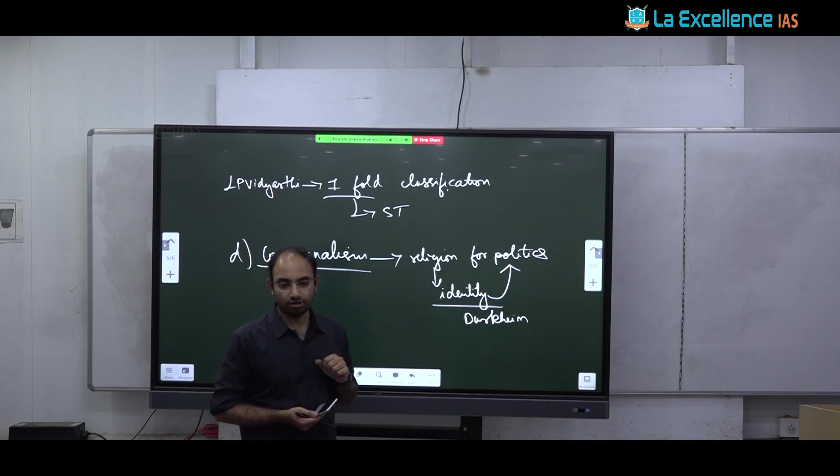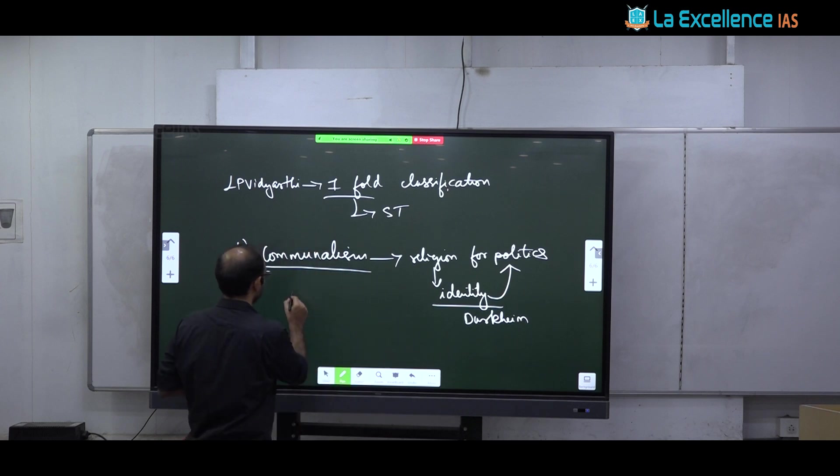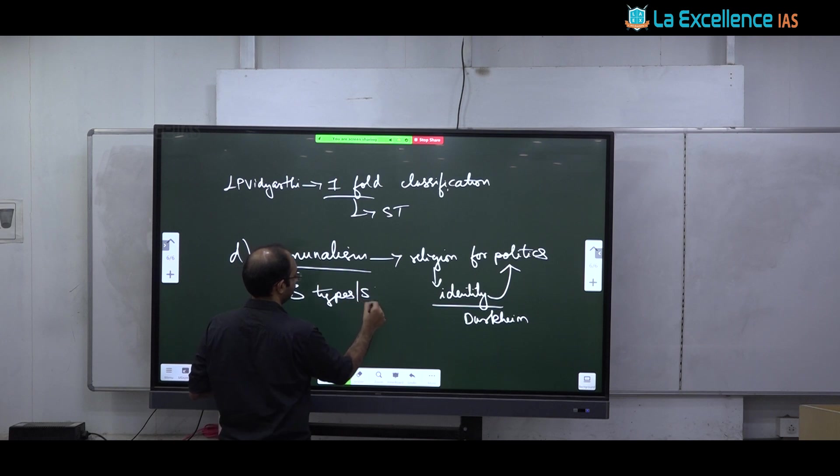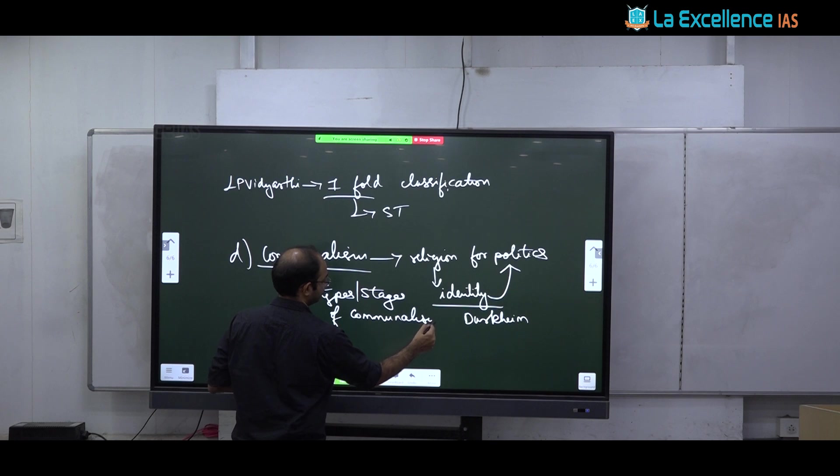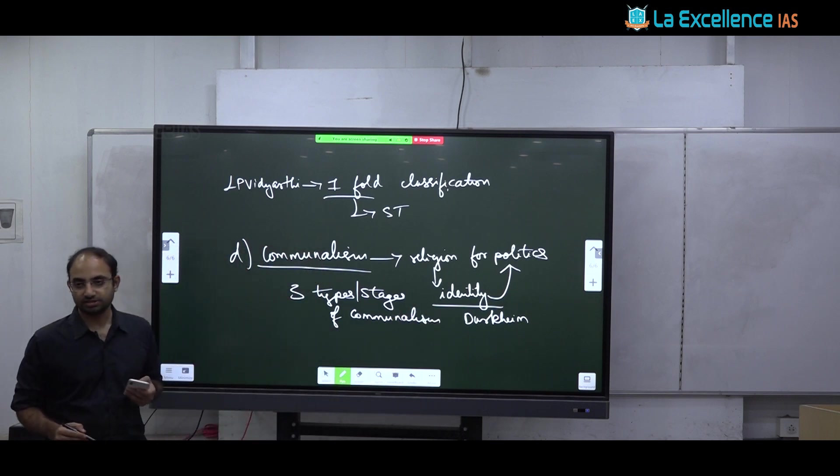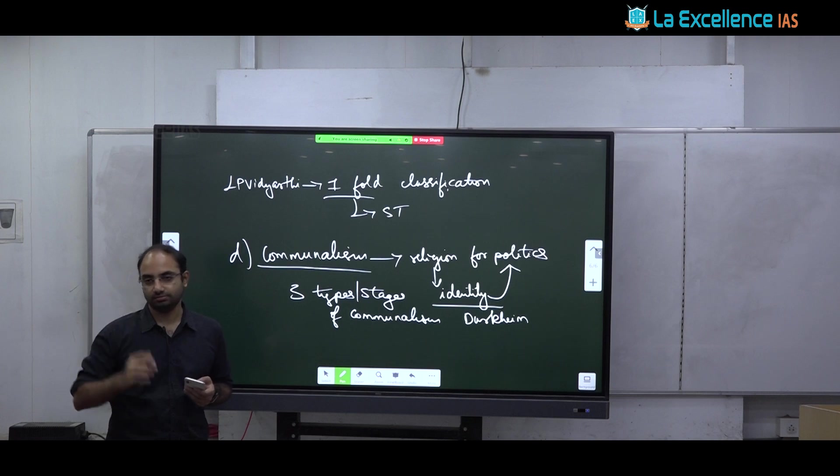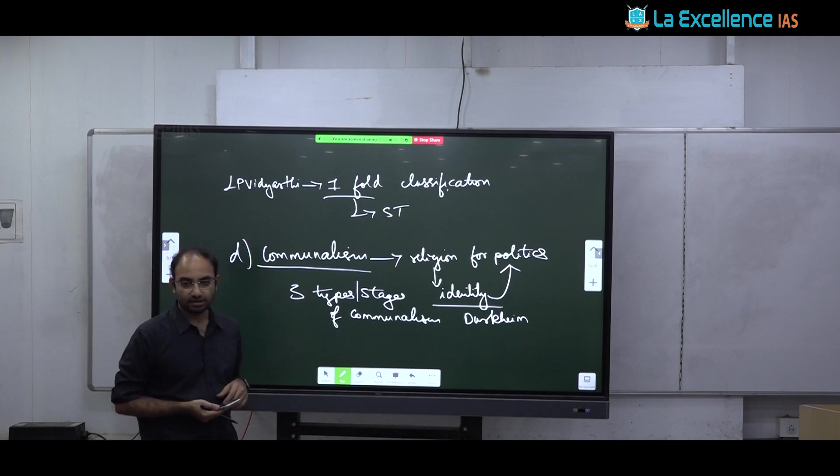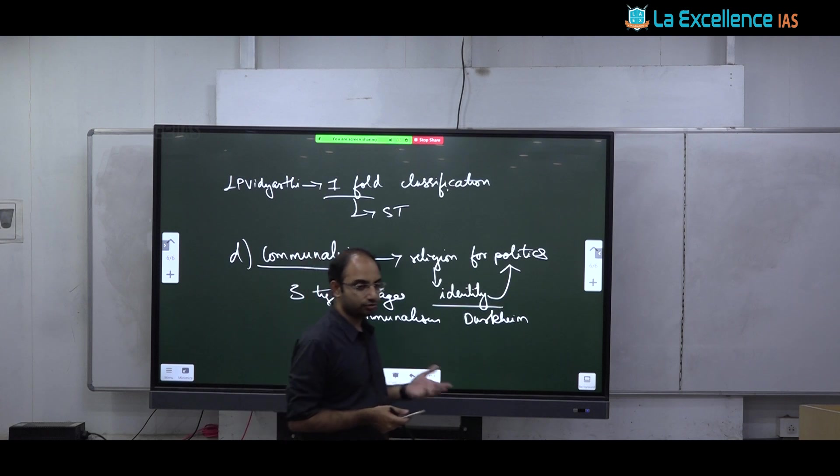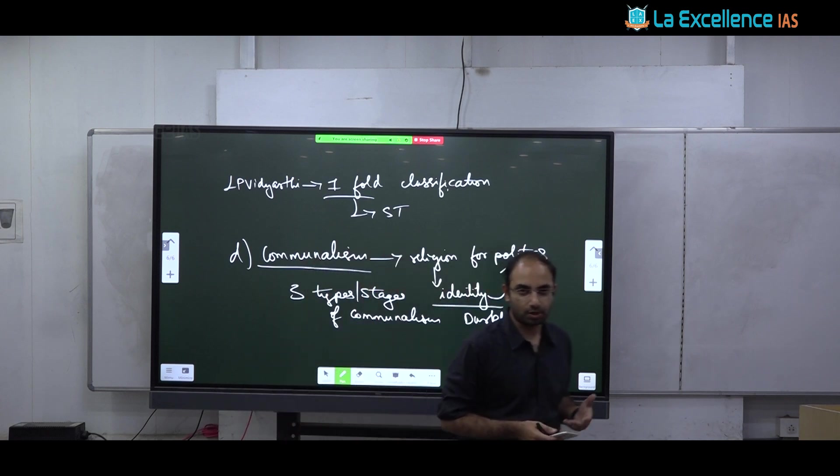Majority in communalism. You can discuss 2 types of communalism or you can follow Bipin Chandra's communalism model. There are 3 types of communalism according to him: Liberal communalism, extreme communalism and moderate communalism. So you can give Bipin Chandra's 3 types of communalism, 3 types or 3 stages. He says in the first stage people have liberal communalism. Next stage there is communal nationalism. Third stage there is extreme communalism. So you can describe that.